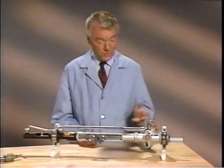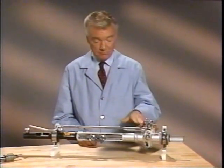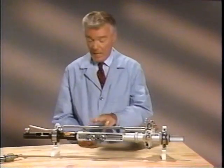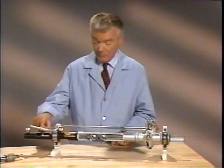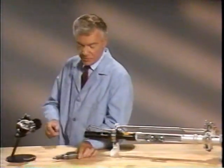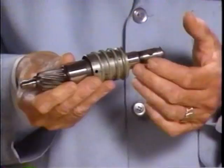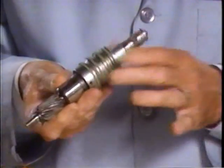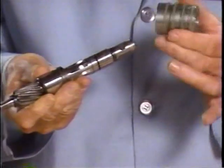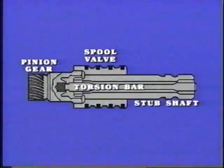The hydraulic components in a power rack and pinion system include the rotary control valve in the top hat, the hydraulic lines to the rack cylinder, and the rack piston. The rotary control valve is a precision assembly. The valve consists of a stub shaft, spool valve, torsion bar, and pinion gear.